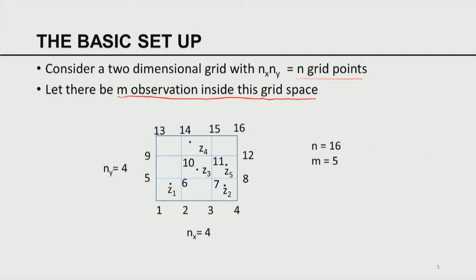In this case, I have a grid with 16 points and 5 observations. At noon January 1st, I am getting 5 observations z = [z1, z2, ..., z5]. This will have a mean z-bar and a covariance matrix C. The covariance matrix C will consist of elements c_ij, where i and j each run from 1 to 5. C_ij is the correlation between the scalar variable at location i and location j.